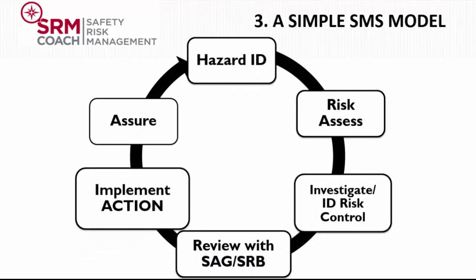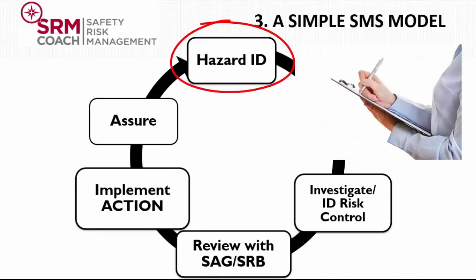First of all, the SMS is a data-gathering tool about risk in the operation. Risk is generated by hazards, which can cause harm or damage if the risk control doesn't work. The biggest source of hazard identification comes from staff reports. There are a few conditions that need to be fulfilled before we start to get useful reports from staff members. First, they need to know what to report — this is a matter of safety training. Second, they need to feel comfortable reporting, meaning they are not worried that something bad will happen to them if they admit to an unsafe act.